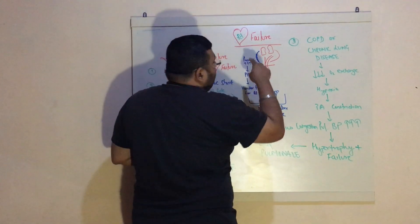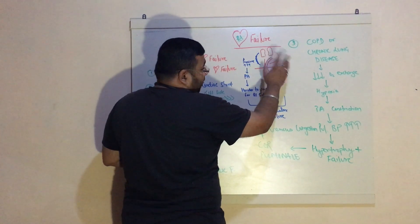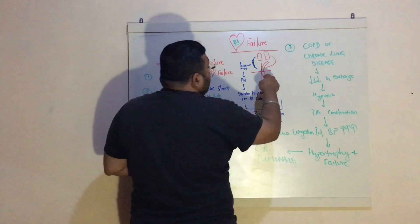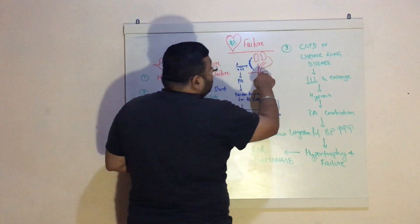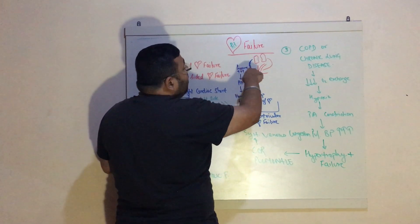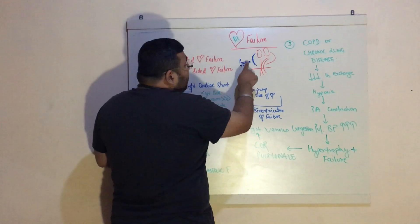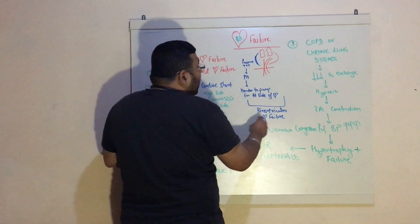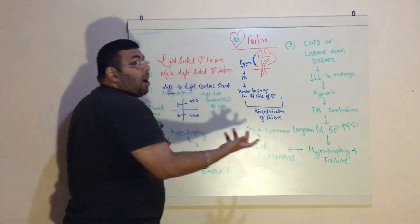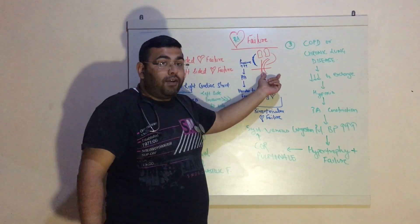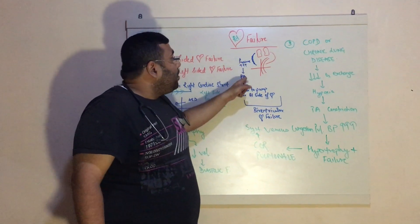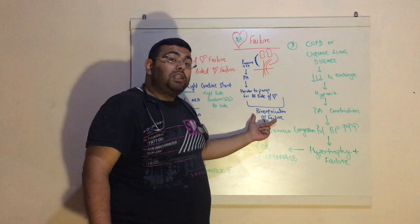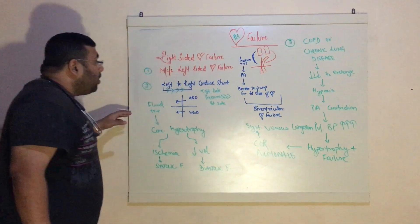When the left-sided heart fails, blood is not properly pumped to the body from the aorta. Blood starts to accumulate on the right side and builds up pressure in the pulmonary artery. When pressure builds up in the pulmonary artery, it is harder for the right side of the heart to pump blood, and that causes biventricular heart failure. The left side has already failed, and because of that the pressure in the pulmonary artery is building up and failing the right side as well — hence we call it biventricular heart failure.